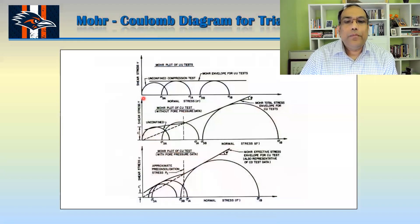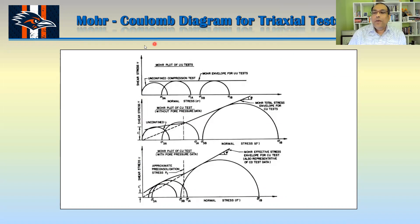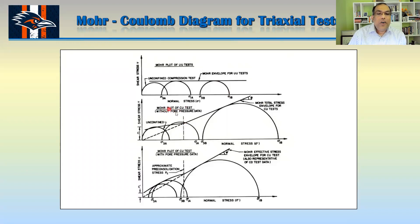Here you can see this is the Mohr-Coulomb diagram for triaxial test. These are your Mohr circles, and this is your Coulomb failure surface. This one is for the UU test — you can see they have similar-sized circles. This is for Mohr circles for the CU test without pore pressure data, meaning you did not subtract the pore water pressure data.